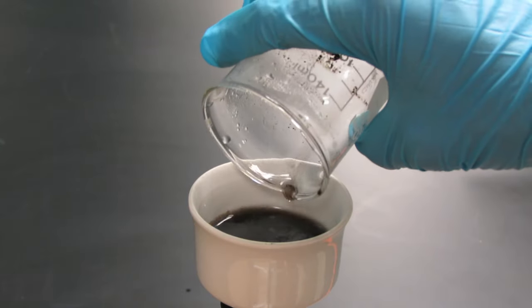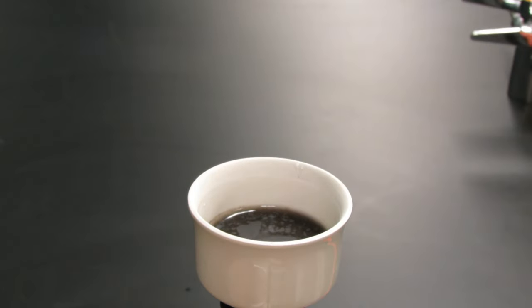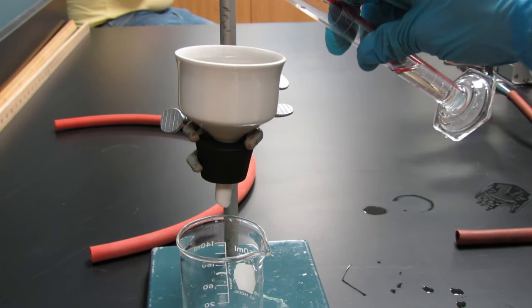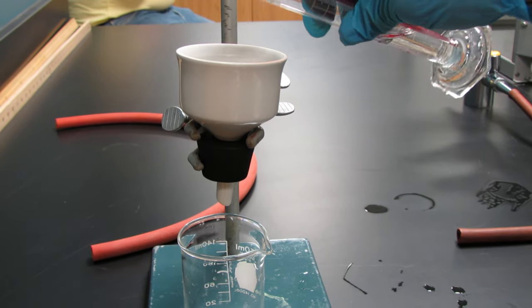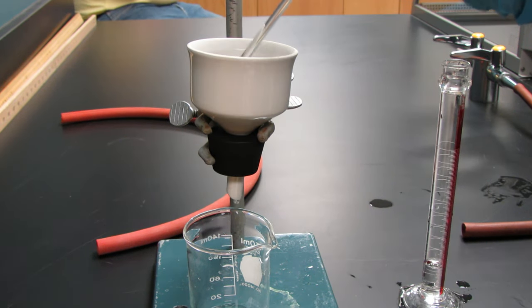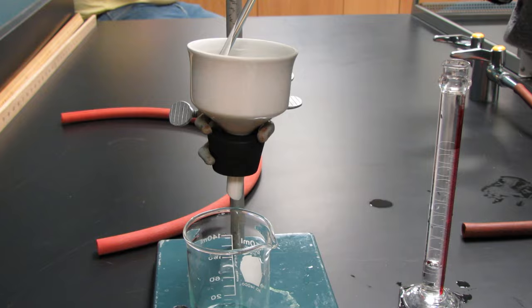Now I'm going to perform a vacuum filtration to retrieve the copper oxide. Put the Buschner funnel into a three prong clamp over a 150 milliliter beaker, and slowly add 20 milliliters of 3 molar hydrochloric acid to it. You can mix this up with a stir rod. What's happening is the copper oxide is dissolving into copper chloride.